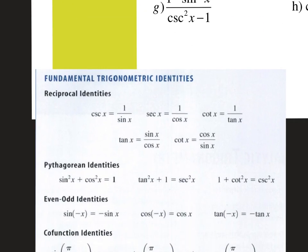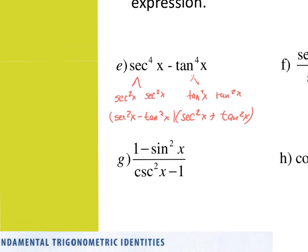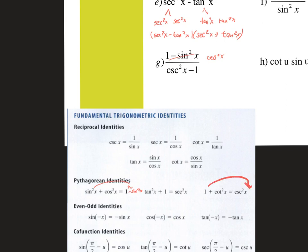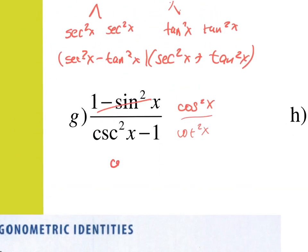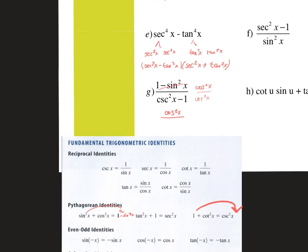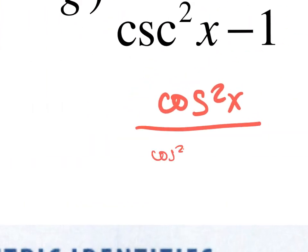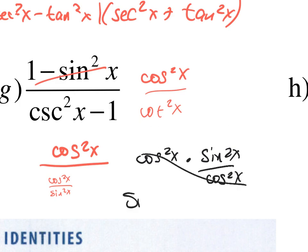Look here: one minus sine squared x. If I move the sine squared x over, this becomes one minus sine squared x, so I can rewrite the top as cosine squared x. Then cosecant squared — if I move the 1 over, cosecant squared minus one becomes cotangent squared. So think about what cotangent is: cosine over sine. I have cosine squared x over cosine squared x over sine squared x. Using keep-change-flip, that's cosine squared x times sine squared x over cosine squared x. The cosine squareds cancel, and you're left with just sine squared x.